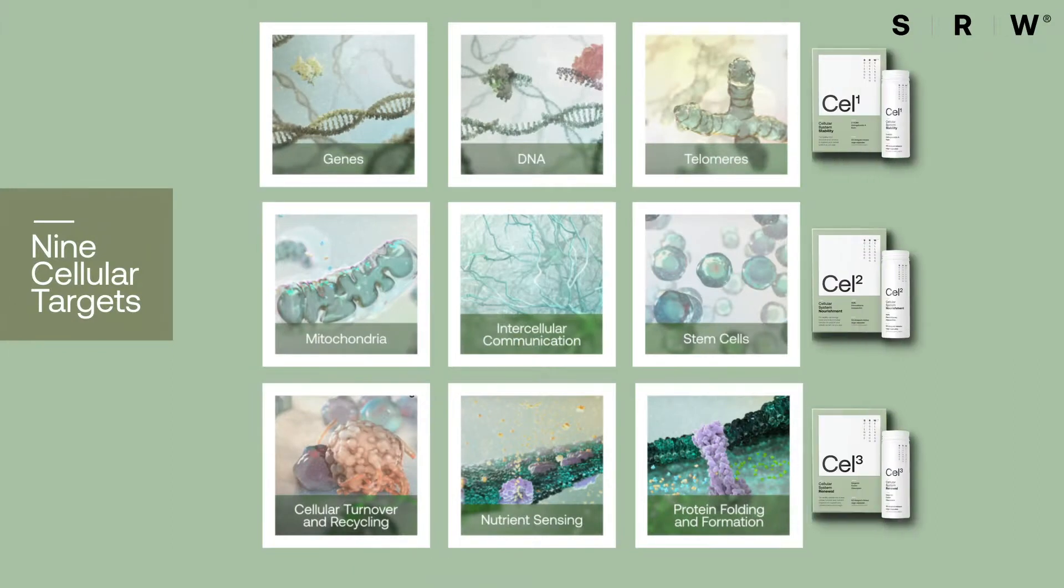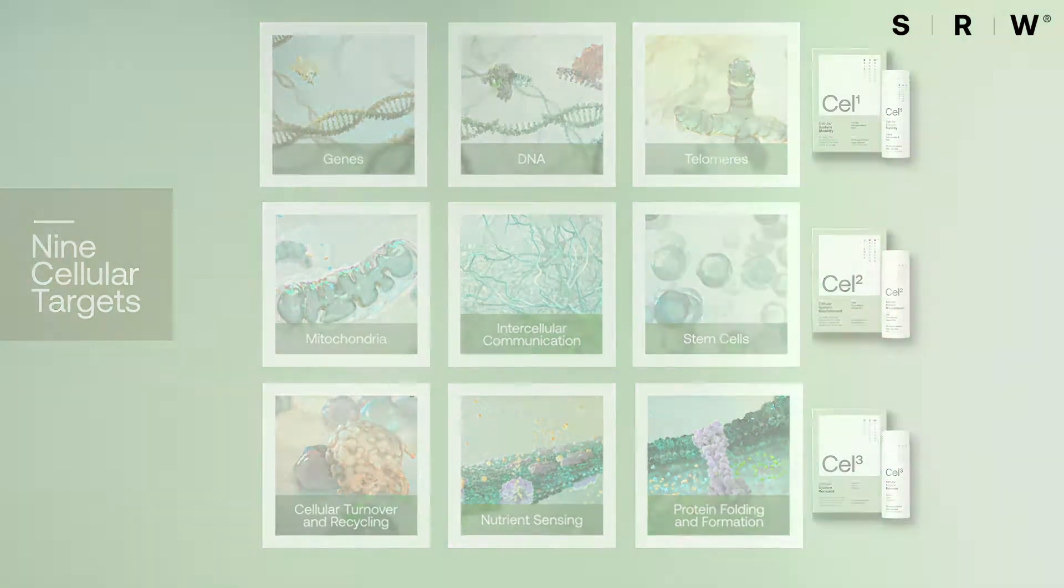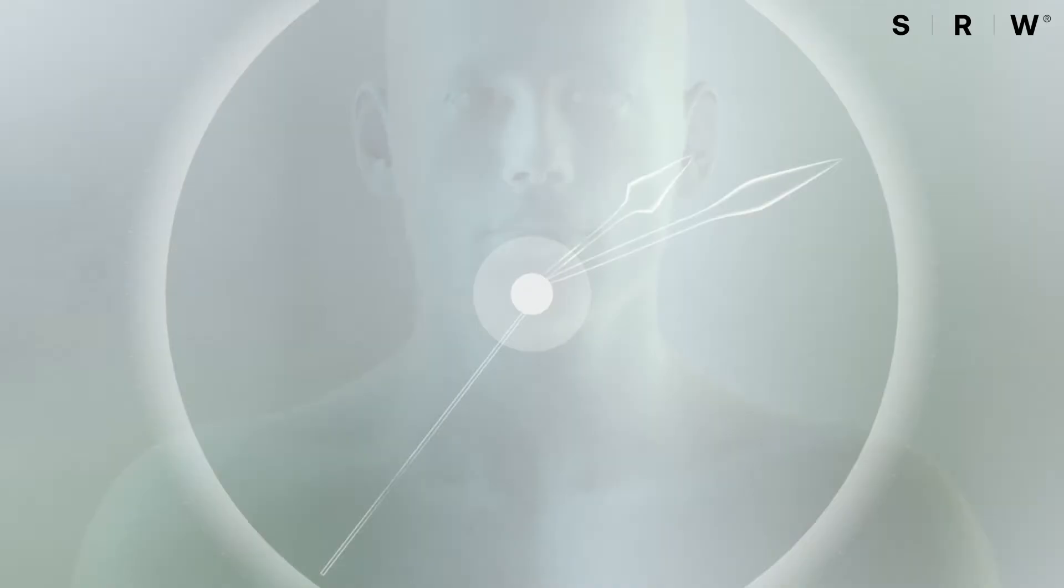The cellular system range supports nine functional areas of the cell that change with age for overall well-being across 12 body systems.